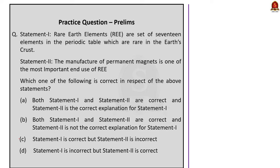This MCQ is statement-based. Statement one says that Rare Earth Elements (REE) are a set of 17 elements in the periodic table which are very rare in the Earth's crust. Statement two says that the manufacturing of permanent magnets is one of the important end uses of rare earth elements. Statement one is wrong because REE are a set of 17 elements — 15 lanthanides plus scandium and yttrium — but they are not rare in the Earth's surface; in fact they are present in abundance.